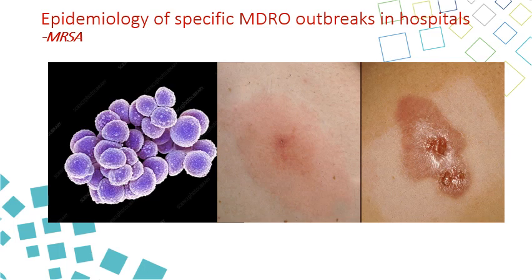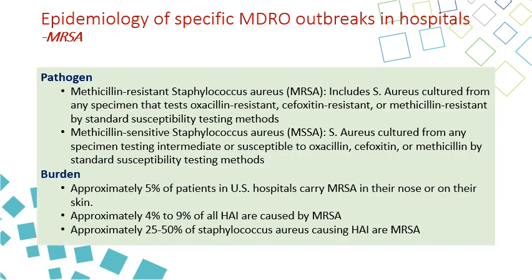We will start with MRSA. As you see in these photos, it is a gram-positive cocci that causes several types of infections, including skin infection and abscesses, and this is one of the common clinical pictures of the disease. We have MRSA and MSSA — MSSA is simply the opposite of MRSA.